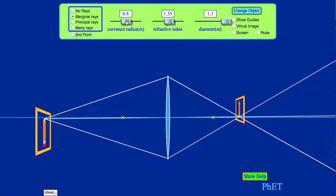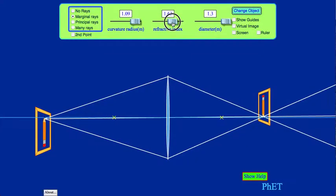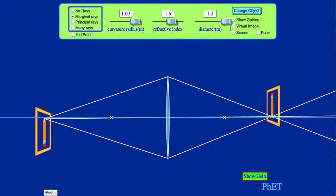The values that I'm going to use for the curvature are 109. The index of refraction I'm going to use is 0.6 and the diameter is 0.3.